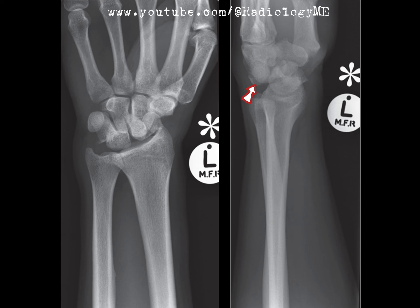This is classic for a dorsal dislocation of the capitate. Now if you take a closer look at the scaphoid, you'll notice a fracture right through the waist of the scaphoid. This combination of findings — the dislocation of the capitate and the scaphoid fracture — gives us what's called a trans-scaphoid perilunate fracture dislocation.